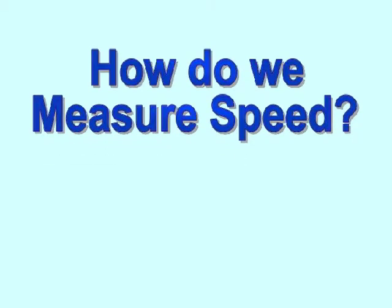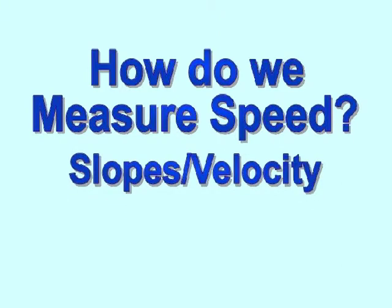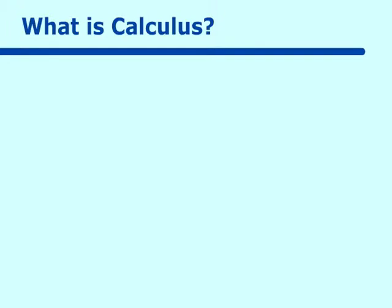This lesson is a continuation of our first lesson on how do we measure speed. However, in this lesson we will take our concept of velocity and speed into the concept of slopes, slopes of tangent lines, slopes of secant lines. But before we do this, we have to find out why we are here. What is this calculus all about?